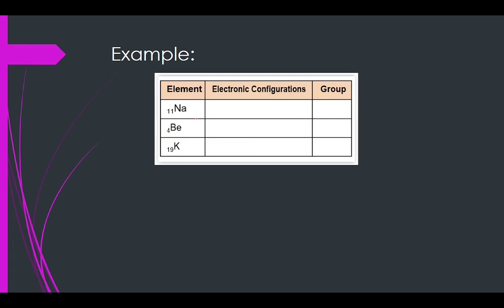For sodium: 1s2, 2s2, 2p6, 3s1. For the group, you look at the end of the electronic configuration — it ends in S, and there is 1 electron at the 3s orbital. The 3 here refers to the outermost shell. We can determine the group by counting the electrons at the outermost shell: 1 electron, so sodium is group 1.